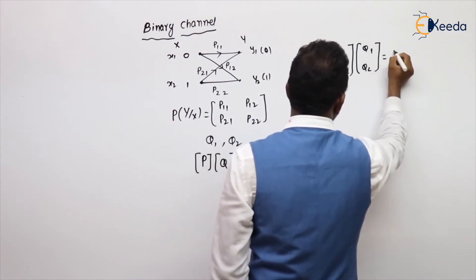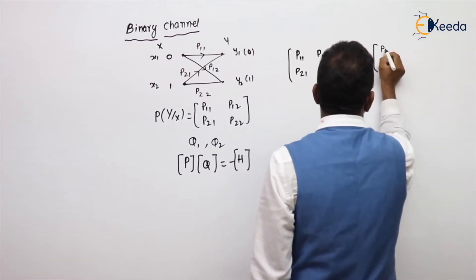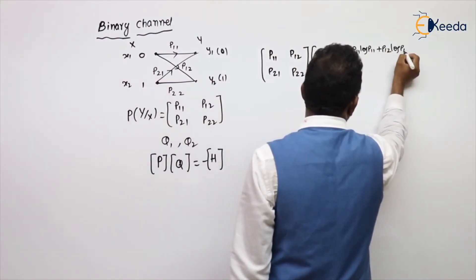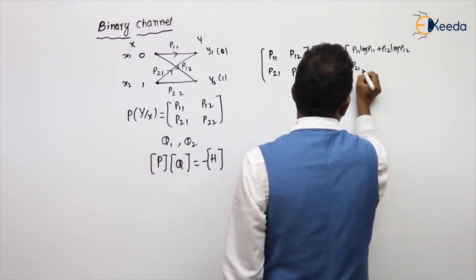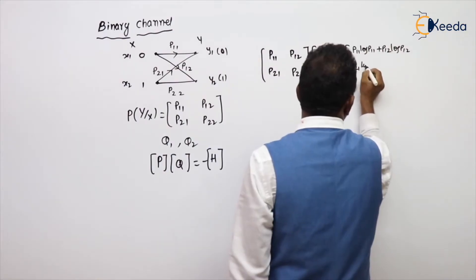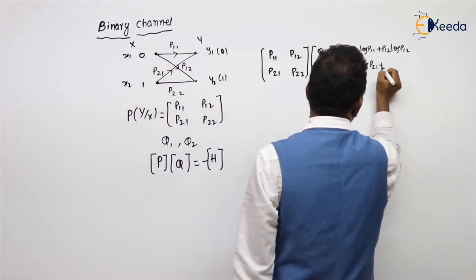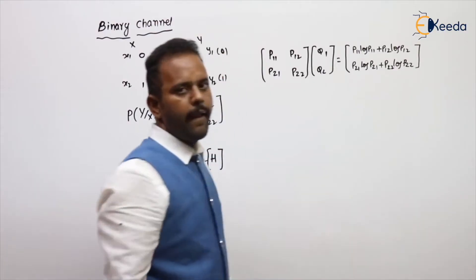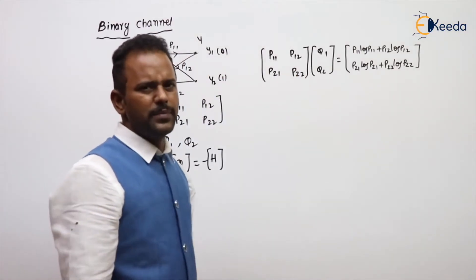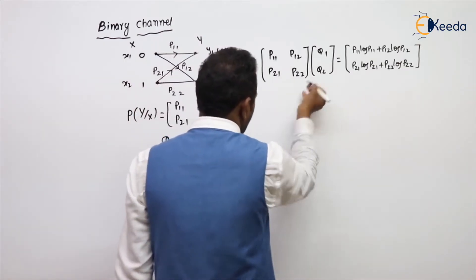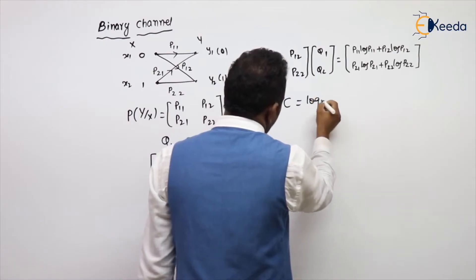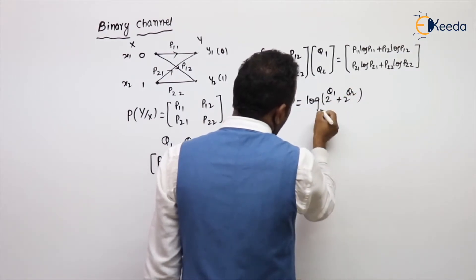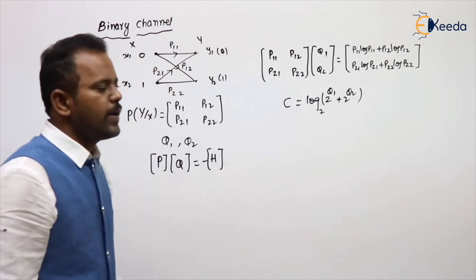That equals minus of [P11·log P11 + P12·log P12; P21·log P21 + P22·log P22]. The derivation is a bit complex and not given here, so directly writing: from there Q1 and Q2 are calculated, and the capacity is C = log(2^Q1 + 2^Q2), base 2 only. This is the capacity of a binary channel.